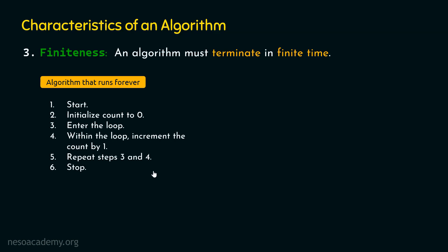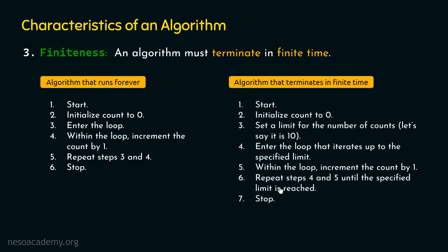Now let's discuss an example algorithm which will terminate in finite time. We initialize count to zero, then set a limit — say ten. We enter a loop that iterates up to the specified limit. Inside the loop, we increment count by one. Step six clearly specifies: repeat steps four and five until the specified limit is reached. The limit is ten, so we repeat these steps ten times. The algorithm terminates in finite time and is considered valid, unlike the previous one which was invalid.